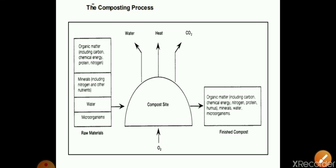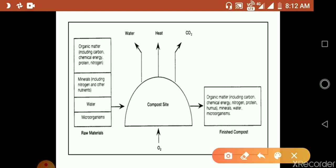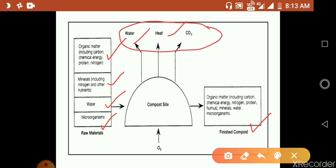The raw materials mainly used for composting are organic matter, minerals including nitrogen and other nutrients, and water. In the presence of microorganisms, these are converted into finished compost containing carbon, chemical energy, nitrogen, protein, and humus. Byproducts released include water, heat, and carbon dioxide. The process shown takes place in the presence of oxygen, though composting can also be anaerobic.